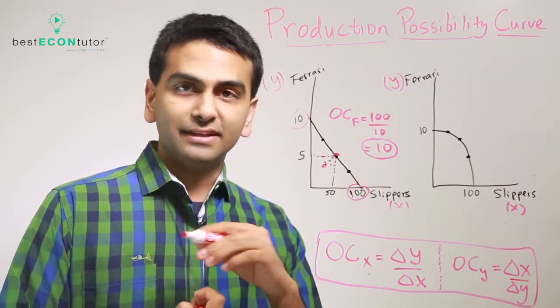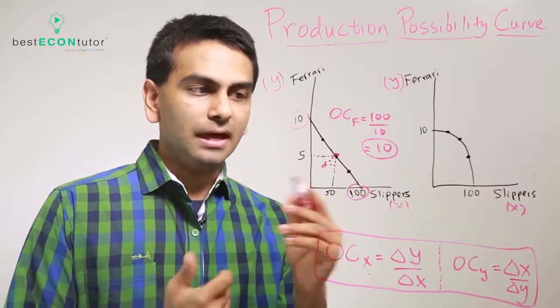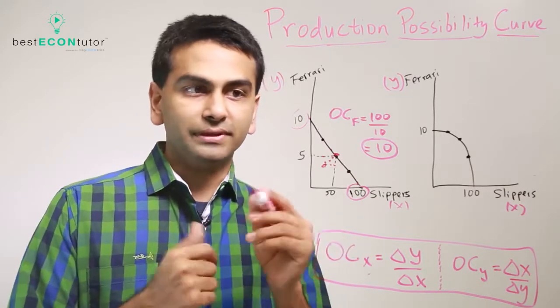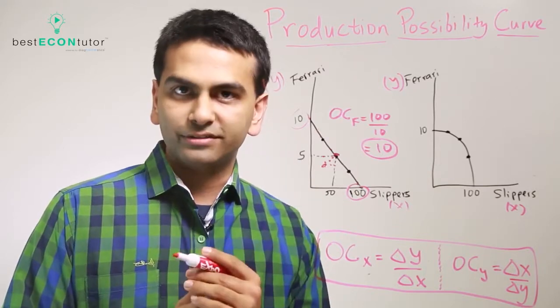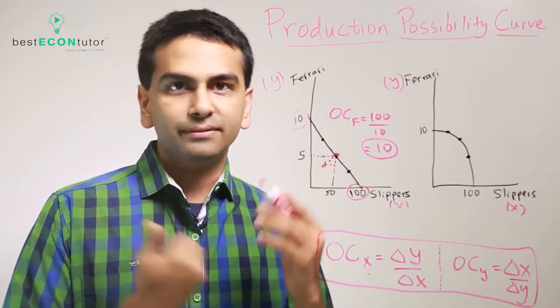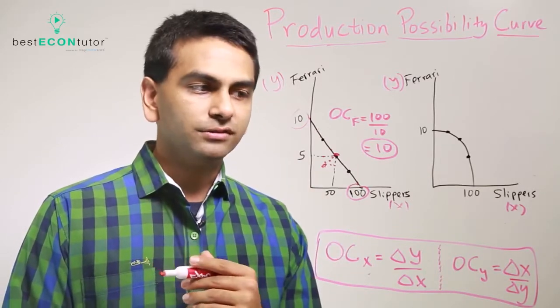Likewise, if you were to take the reciprocal, that'd be the cost of a slipper. The cost of a slipper is simply 10 Ferraris over 100 slippers, which is 10 over 100, or 1 tenth.